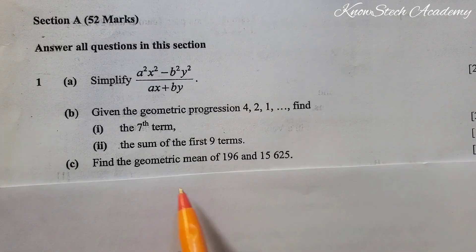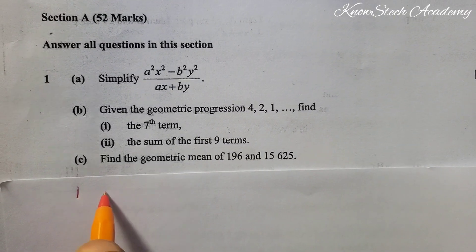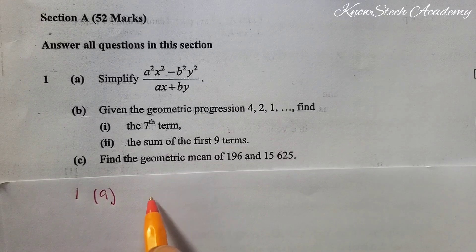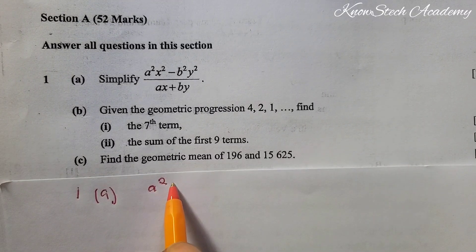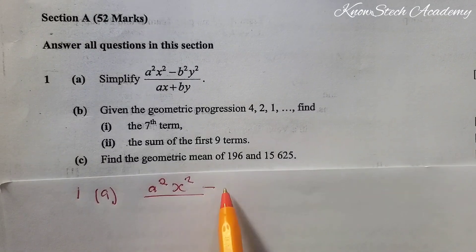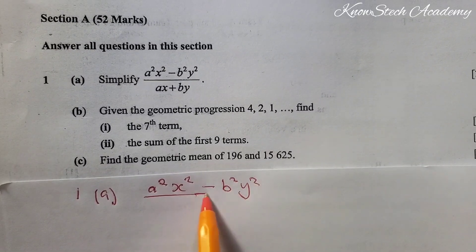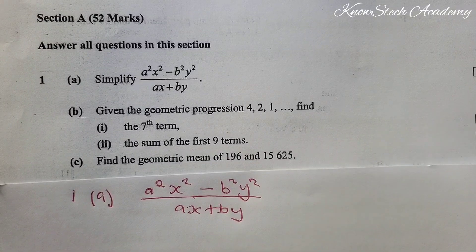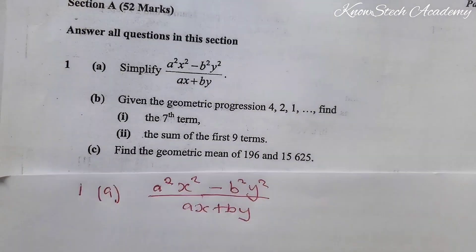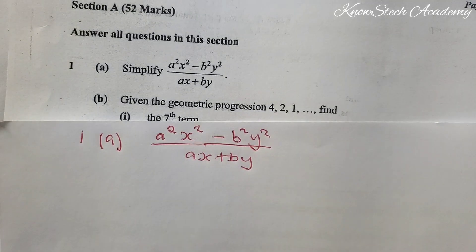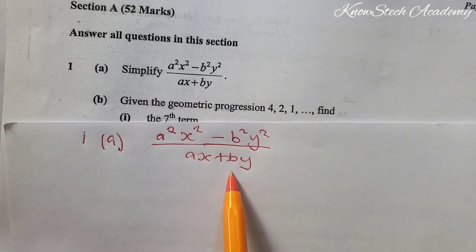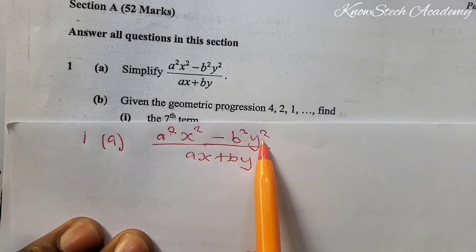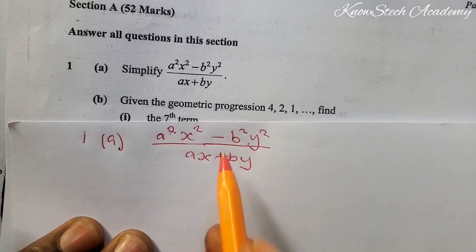The first one is an algebraic question — question 1A. We are told to simplify this expression: a²x² minus b²y², over ax plus by. For such questions you need to be very careful. Here we only have one term on top, and that term is divided by the denominator. So what you do is factorize. When you look at the top, we have nothing in common, but everything is squared and there is a minus — that means this is a difference of two squares.